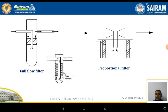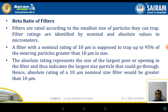Another type is the proportional filter. In the proportional filter, the left side is the inlet and the right side is the outlet. Only a small proportion of the oil is filtered, and the rest is retained. This is different from the full flow filter, where the entire oil passing through the hose is filtered and passed to the application end. There is also another type called the beta ratio filter.